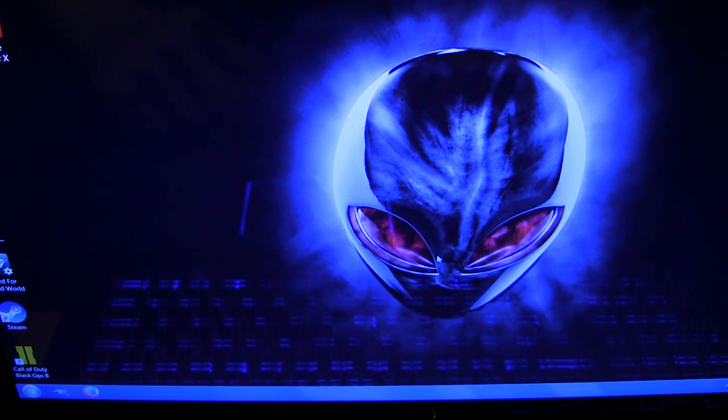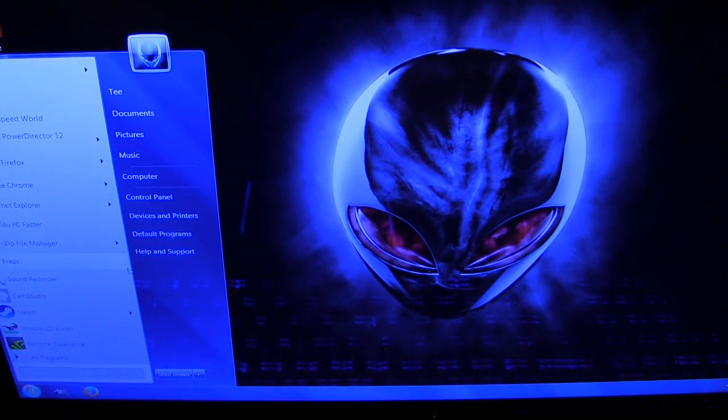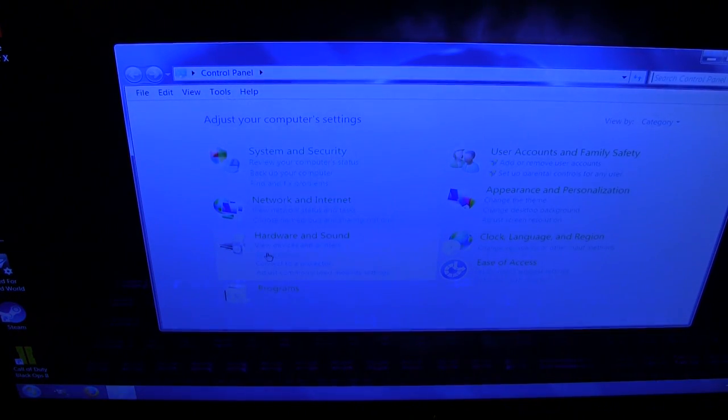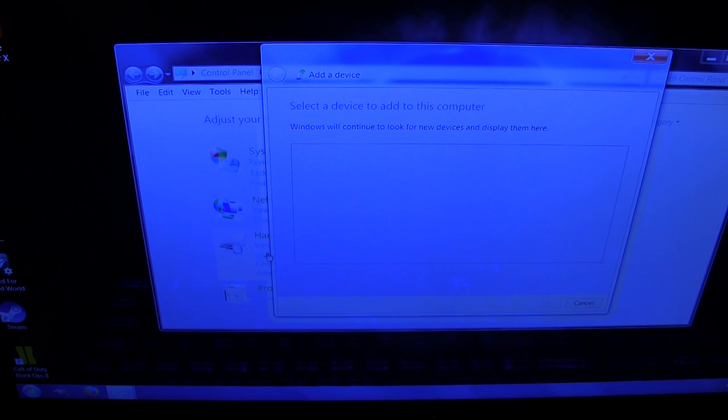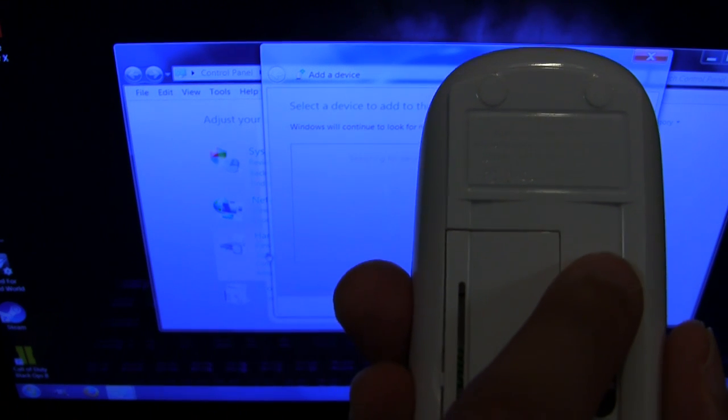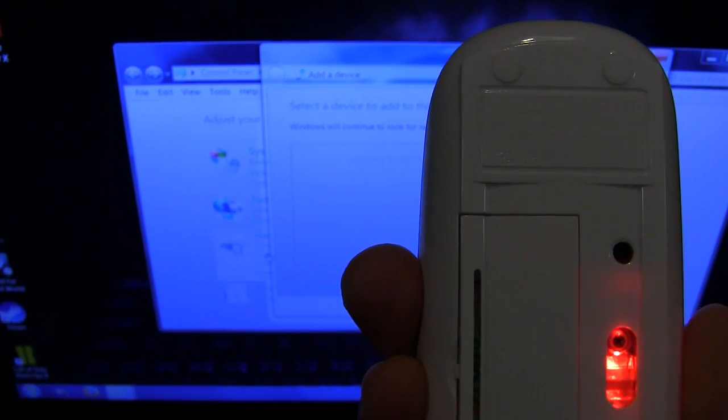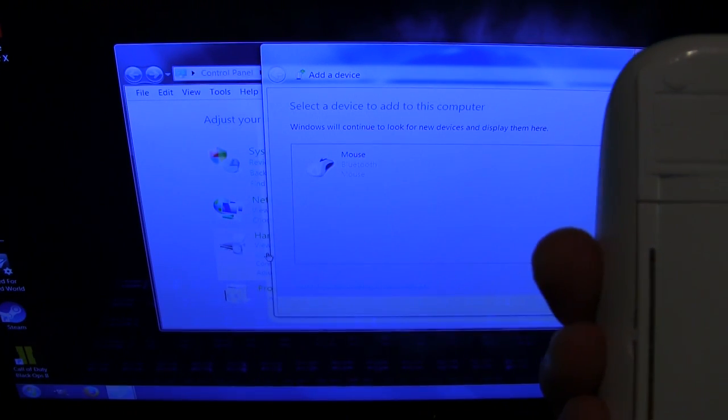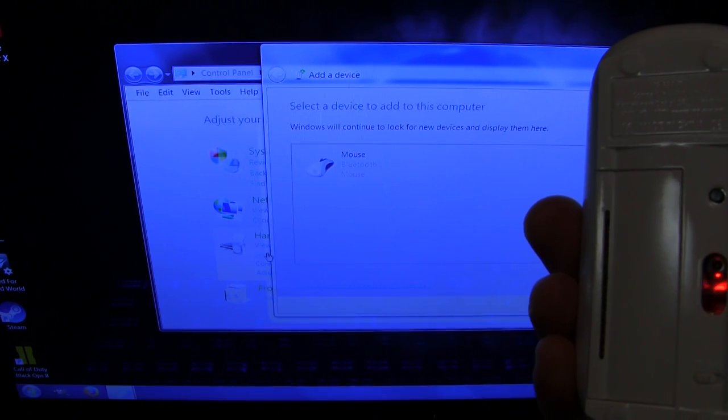Okay, so what we're going to do is, it's running on Windows 7, so if we go into the Start Menu, Control Panel, Add a Device, and then if we press that black button there, which is the Bluetooth button on the mouse, it should try and there we go.